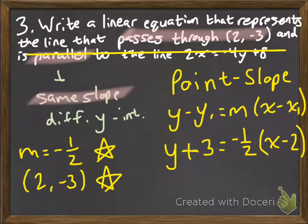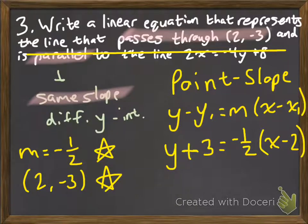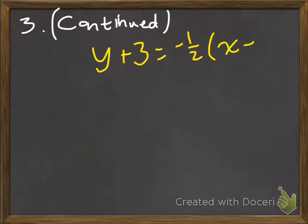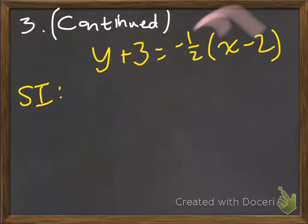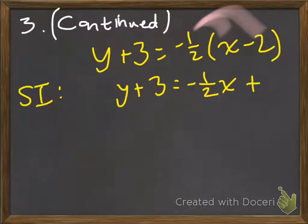If I ask you, for example, to put it into slope intercept form. Well, if I want you to put it into slope intercept form, you would solve for the y. So we're first going to distribute. You get y + 3 equals negative 1 half times positive x is just negative 1 half x. Negative 1 half times negative 2 is positive 1. Please pay attention to that sign and to that sign, or else you're going to get messed up.